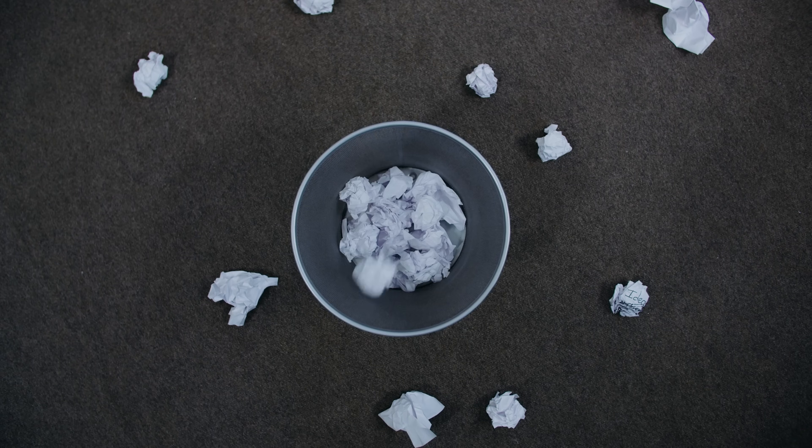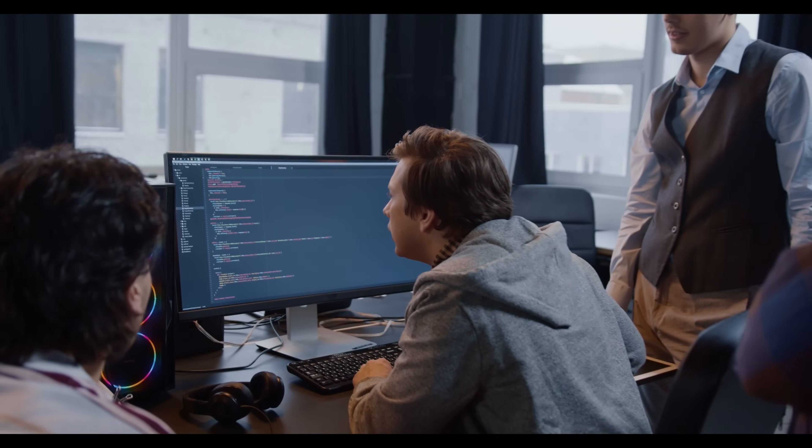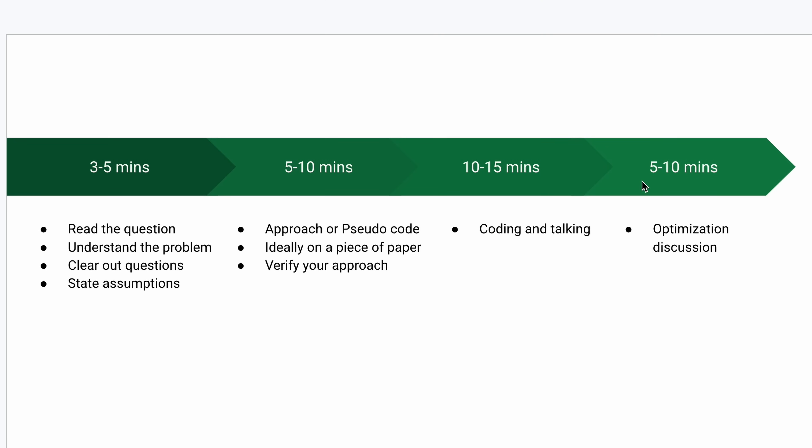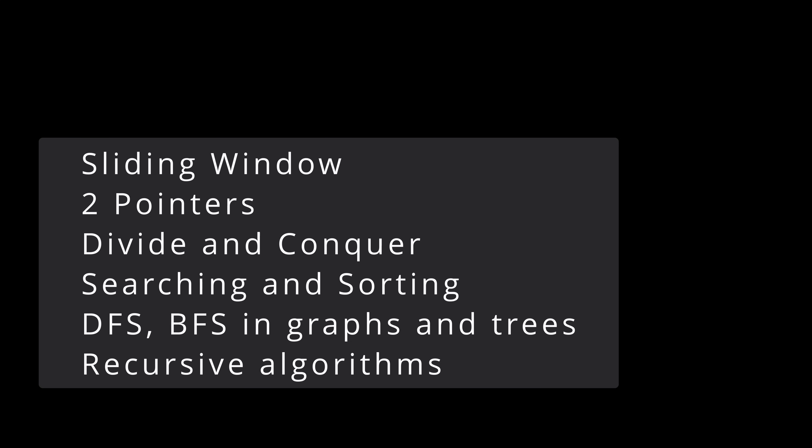Even while coding, try to explain as much of your code as possible to the interviewer. As an interviewer myself, most people who get rejected in DSA rounds get rejected because of their inability to explain what they are coding, not the coding itself. Communication is as important as your coding strategy. The last five to ten minutes should be spent optimizing in terms of time complexity. Most common patterns include sliding window, two pointers, divide and conquer, searching and sorting, BFS and DFS for tree and graph traversals, and recursion.